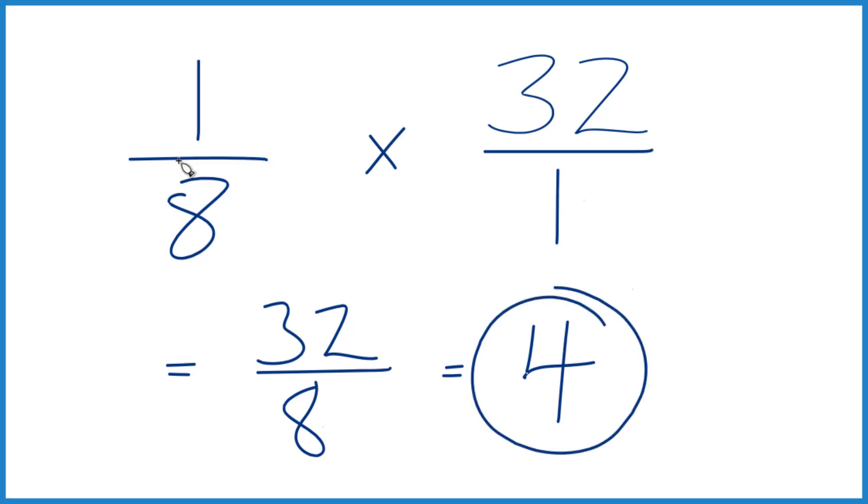To recap, we took that 'of', changed it to multiplication, put our number over 1, so we were just multiplying our two fractions, and we got our answer.